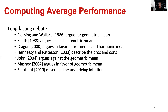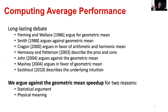How to compute average performance is actually the subject of a long-lasting debate. In 1986 Fleming and Wallace argued for the geometric mean. Jim Smith in 1988 argued against it. Kragen in 2000 argues in favor of the arithmetic and harmonic mean, and Hennessy and Patterson in their famous book describe the pros and cons of the different means. In 2004, Lilja argues strongly against the geometric mean, and Mashey in 2004 argued strongly in favor of it. In my performance analysis book from 2010, I described the underlying intuition behind these different viewpoints. What we do in this paper is argue against the geometric mean speedup for two reasons: a statistical argument and physical meaning.